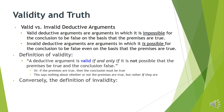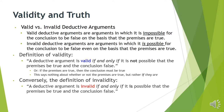Conversely, the definition of invalidity: a deductive argument is invalid if and only if it is possible that the premises be true and the conclusion false. It's allowing that relationship to deteriorate — the premises can be true and the conclusion can be false while the premises are true.